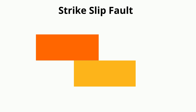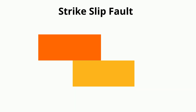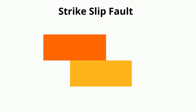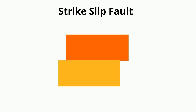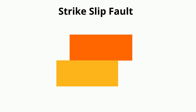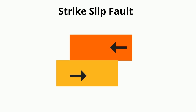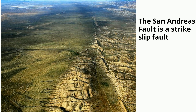In a strike-slip fault, the blocks move past each other horizontally. A strike-slip fault occurs due to shear stress, which pushes the rocks horizontally but in opposite directions. Strike-slip faults are common along transform boundaries, like the San Andreas fault.